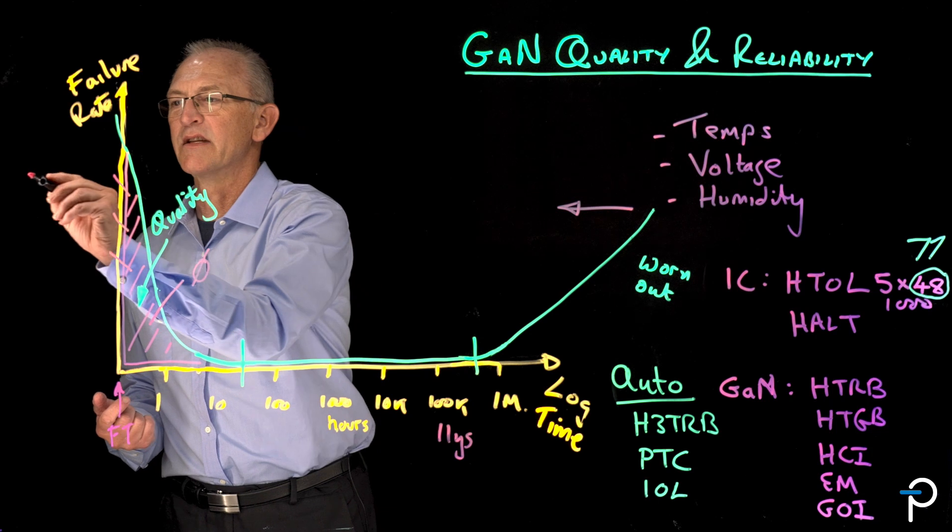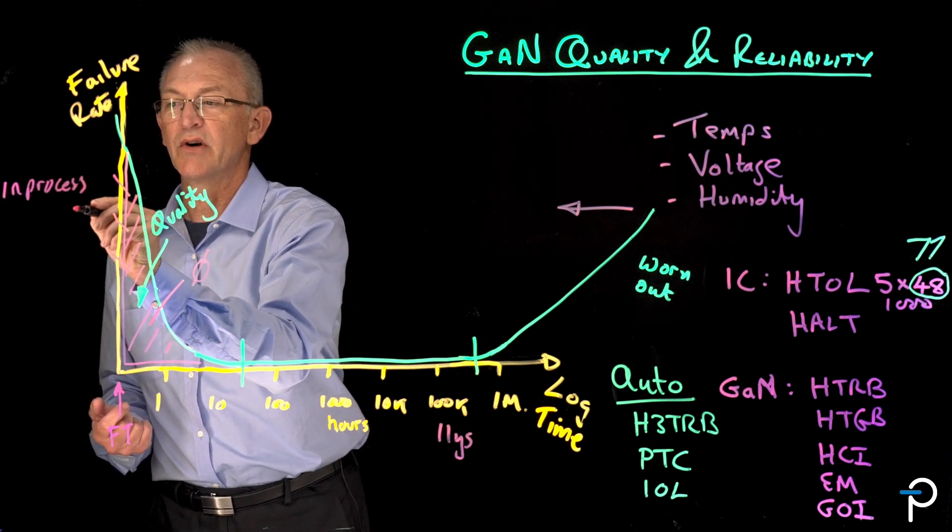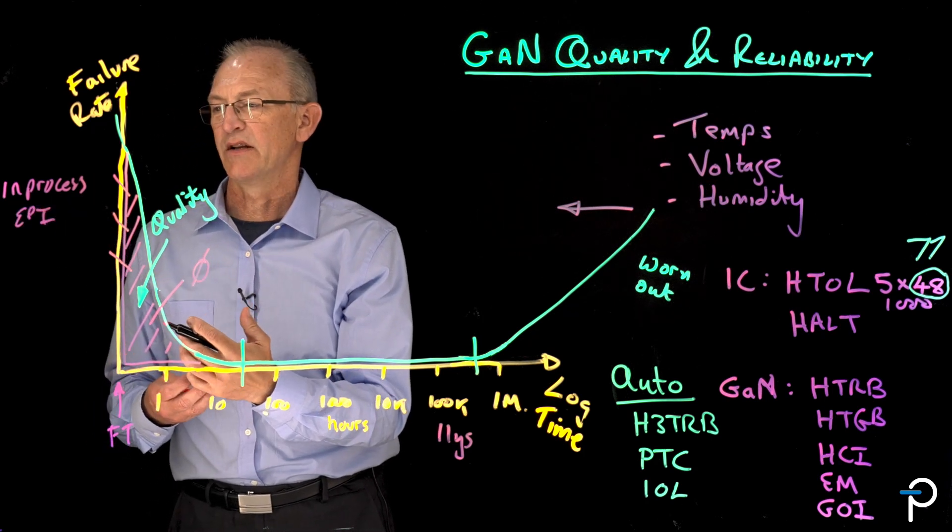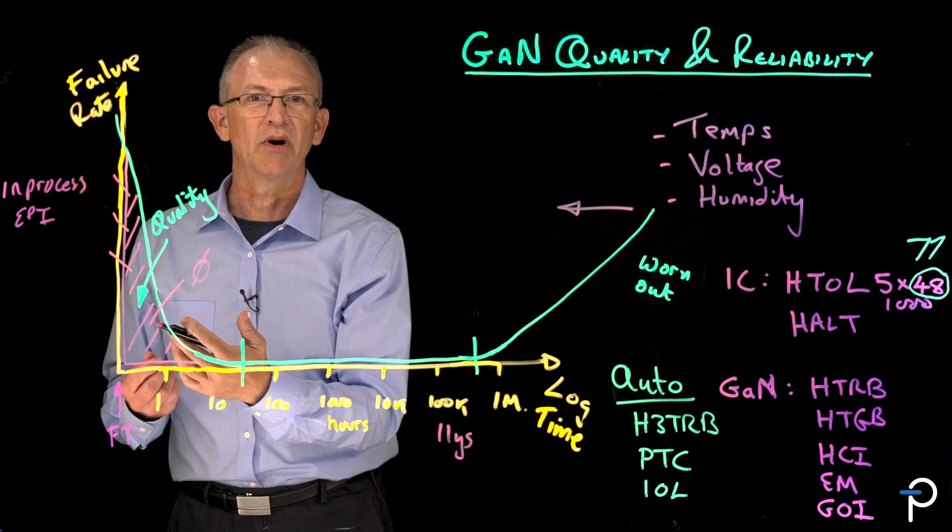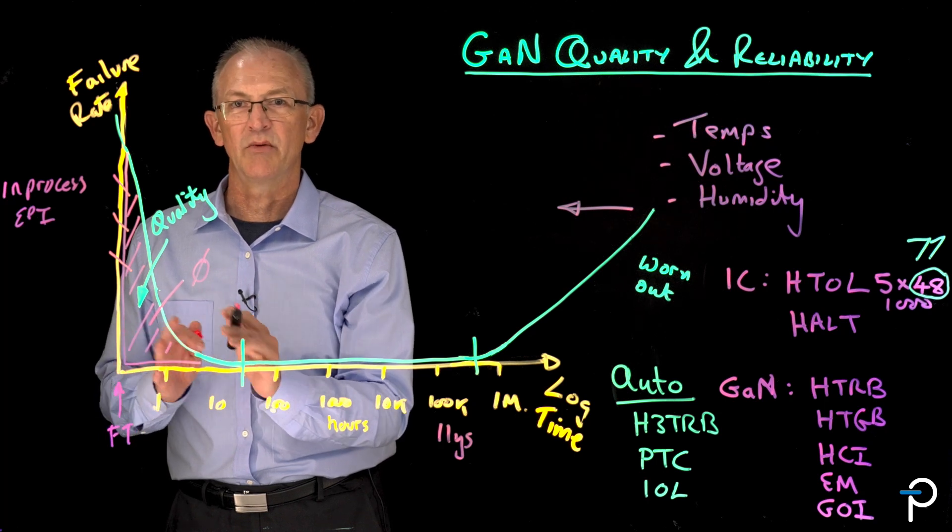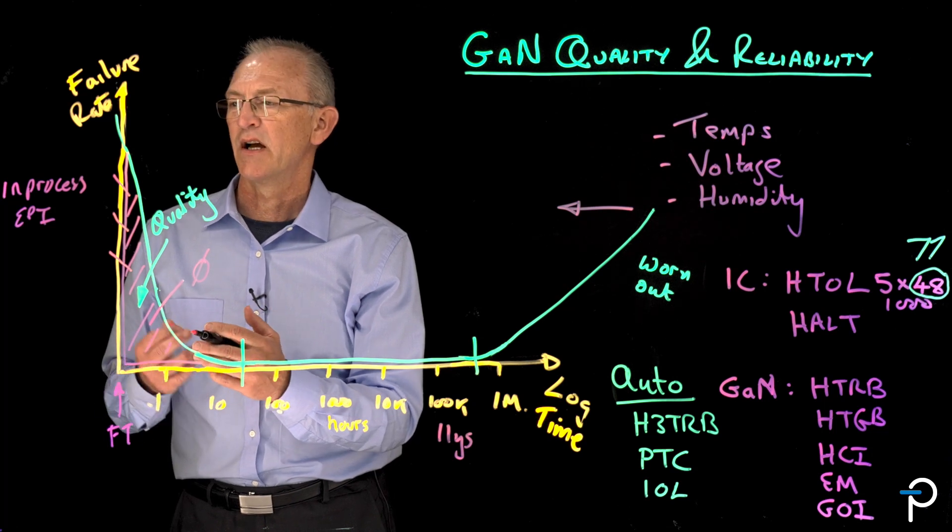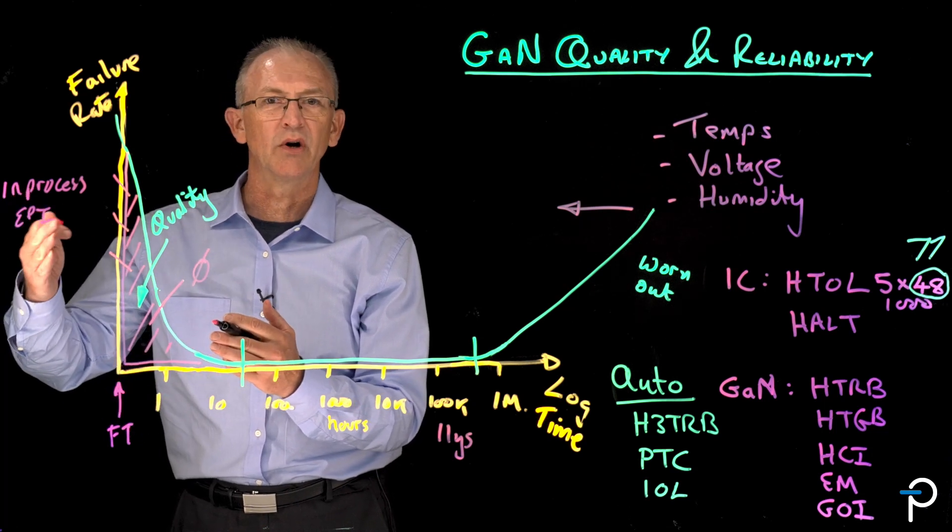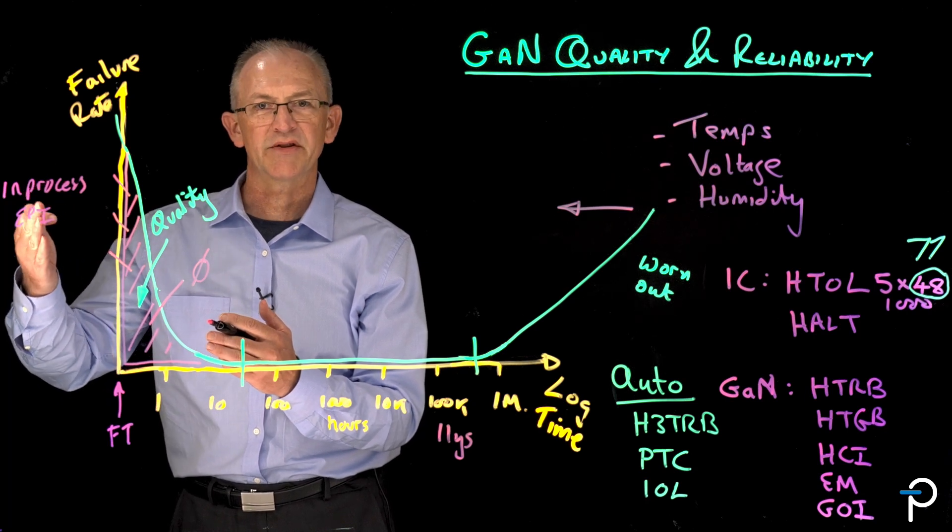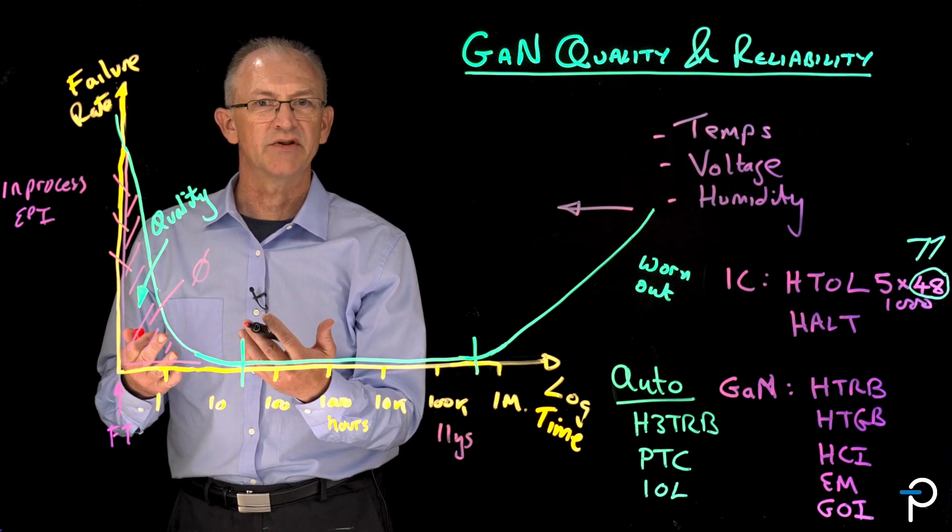So how do we find these parts and eliminate them before they even get to final test? Well, the way we do that is firstly, our in-process monitor of our EPI. EPI is absolutely critical when you build GaN. It's the most important part of generating a GaN transistor. And because we build our own EPI, we don't buy it from a fab. We don't buy finished wafers either. We build everything. It means we have complete control over the process and we can check it at various points. And that means that only the best wafers make it through to patterning.